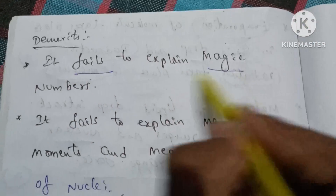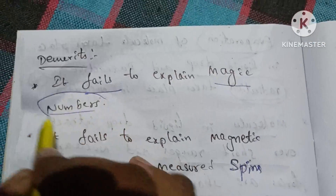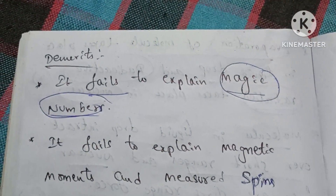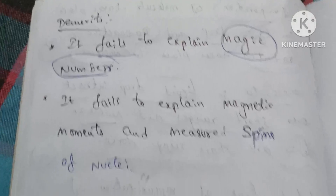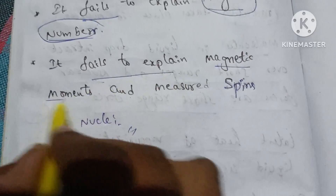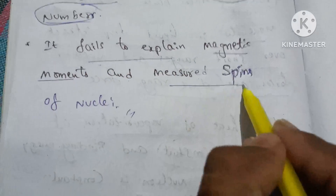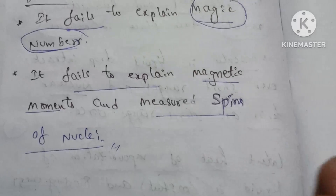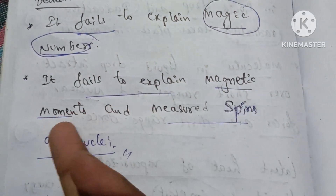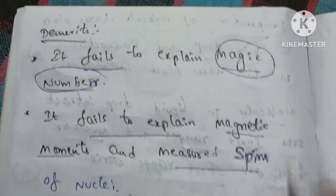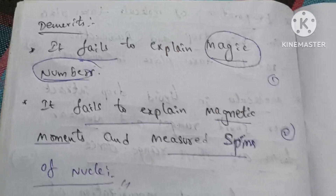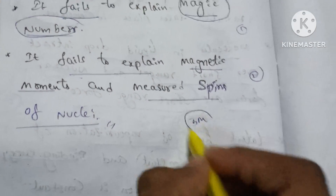Demerits: the liquid drop model fails to explain magic numbers. It also fails to explain the magnetic moments and measured spins of nuclei. These are the key demerits of the liquid drop model.